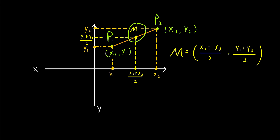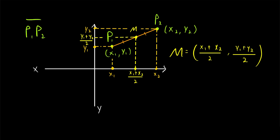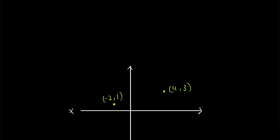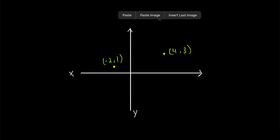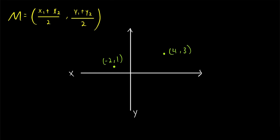Since this is the midpoint of segment p1p2, it follows that the distance from p1 to M is equal to the distance from M to p2 — this segment is congruent to that segment. M is halfway between p1 and p2. Now if all the letters and subscripts is a bit much, let's go ahead and check out an example and use the formula that we just discovered.